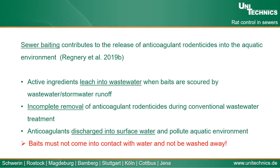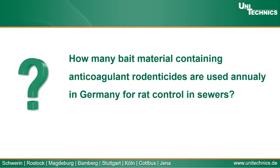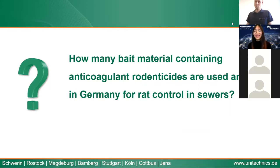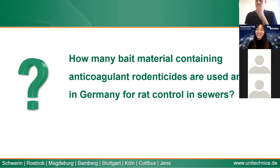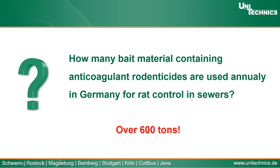Now I have another quiz: how many bait materials containing anticoagulant rodenticides are used annually in Germany for rat control — only in the sewers? The answer is actually over 600 tons. When we think about 600 tons of rodenticides used only for rat control in sewers in Germany, we can imagine how much of these anticoagulants has been discharged into our water courses and accumulated by fish — eventually coming onto our table.